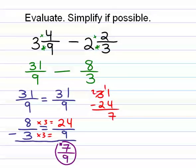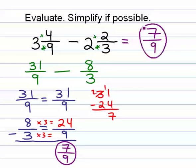Therefore, 3 and 4 ninths minus 2 and 2 thirds equals 7 ninths. That's it.